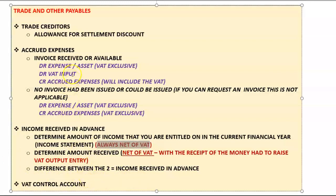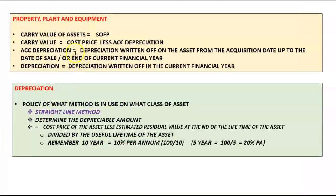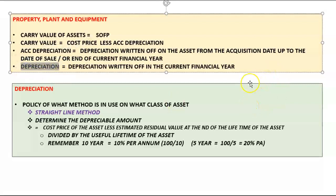The VAT control account with a credit balance forms part of trade and other payables. Property, plant and equipment must be shown in the statement of financial position at carrying value, which equals cost less accumulated depreciation to year end. Accumulated depreciation is the total depreciation written off from the acquisition date to year end, or to the date of sale if the asset was disposed of during the year. Depreciation for the period includes depreciation on all assets held during the year, even those sold partway through.